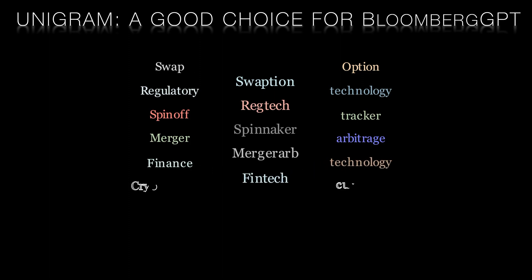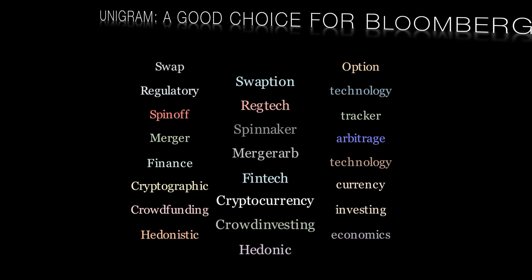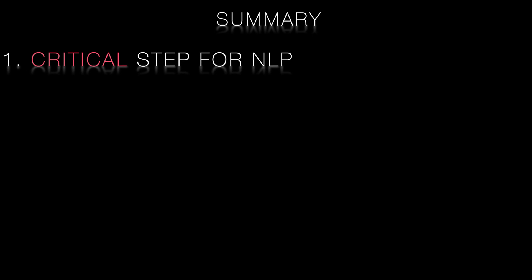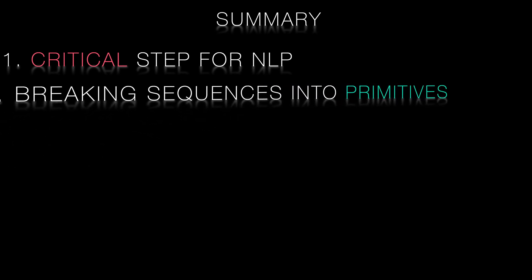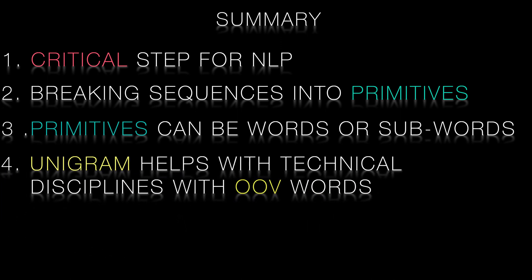Hence, unigram has shown to be a useful approach for Bloomberg GPT. In summary, tokenization is a critical step in natural language processing that involves breaking up text into smaller units that can be easily processed by a computer. Unigram tokenization is a powerful technique that can be used to process text in a wide range of languages, including those with complex morphologies or non-alphabetic writing systems. While unigram tokenization does have some limitations, it remains a useful tool for NLP tasks like classification or sentiment analysis.